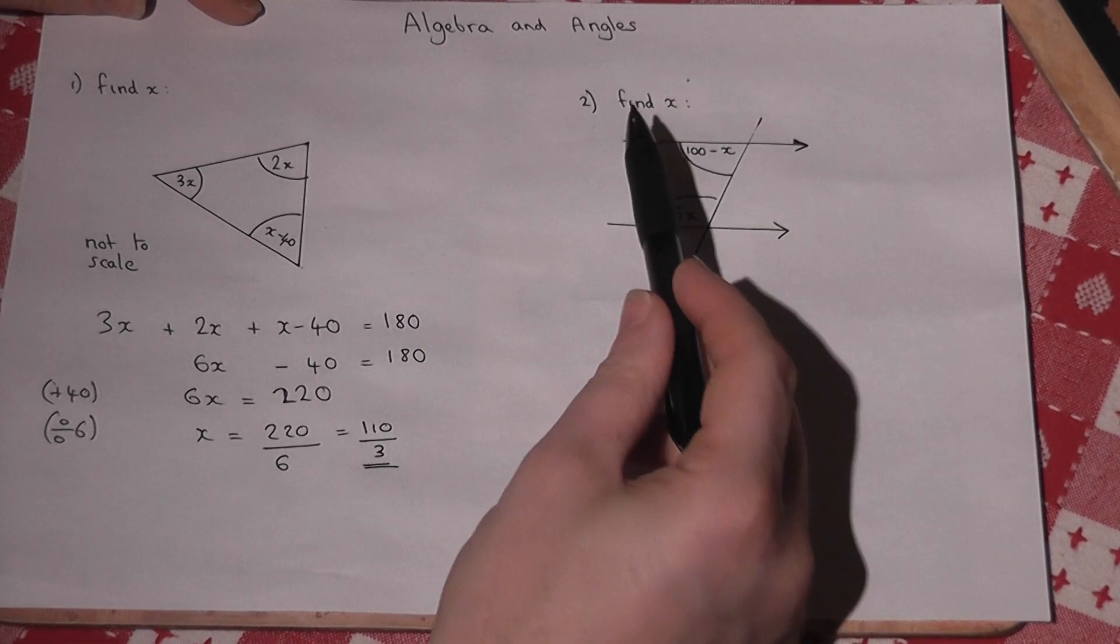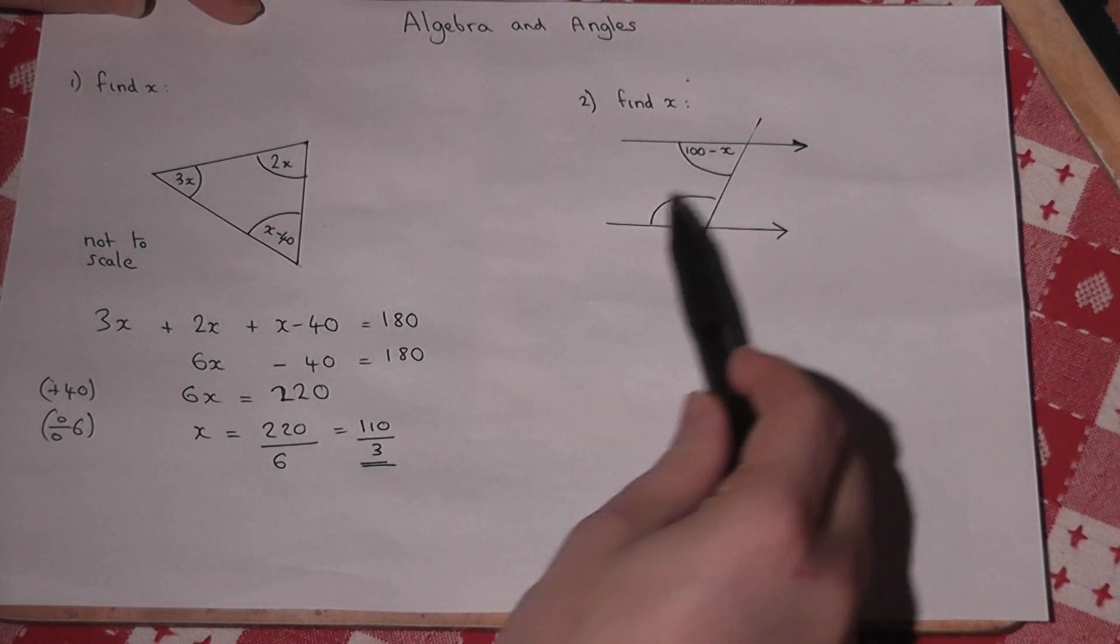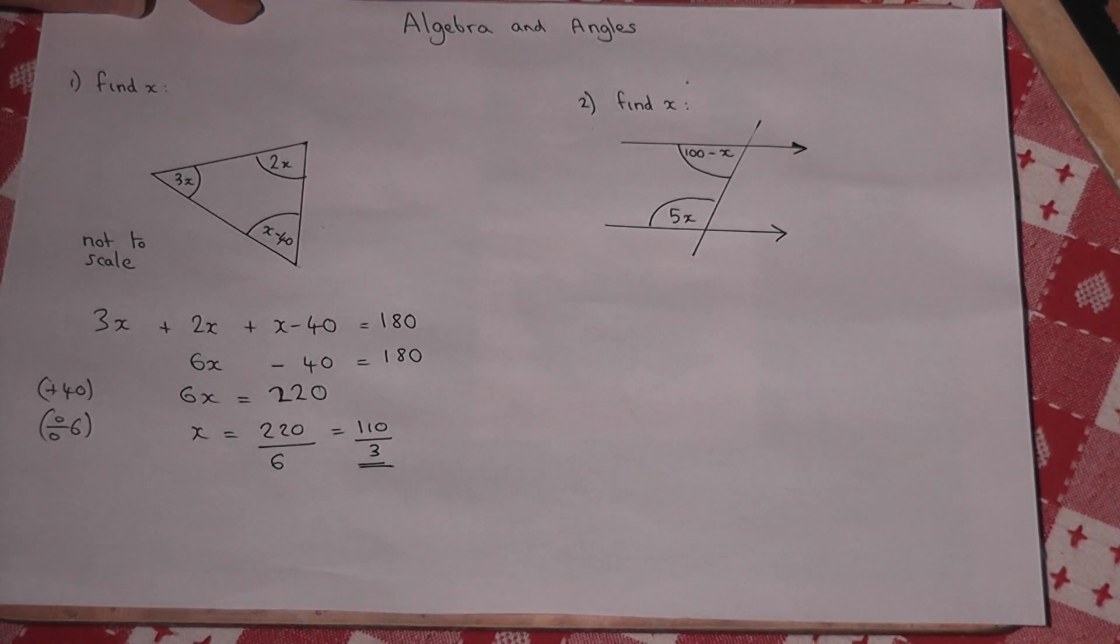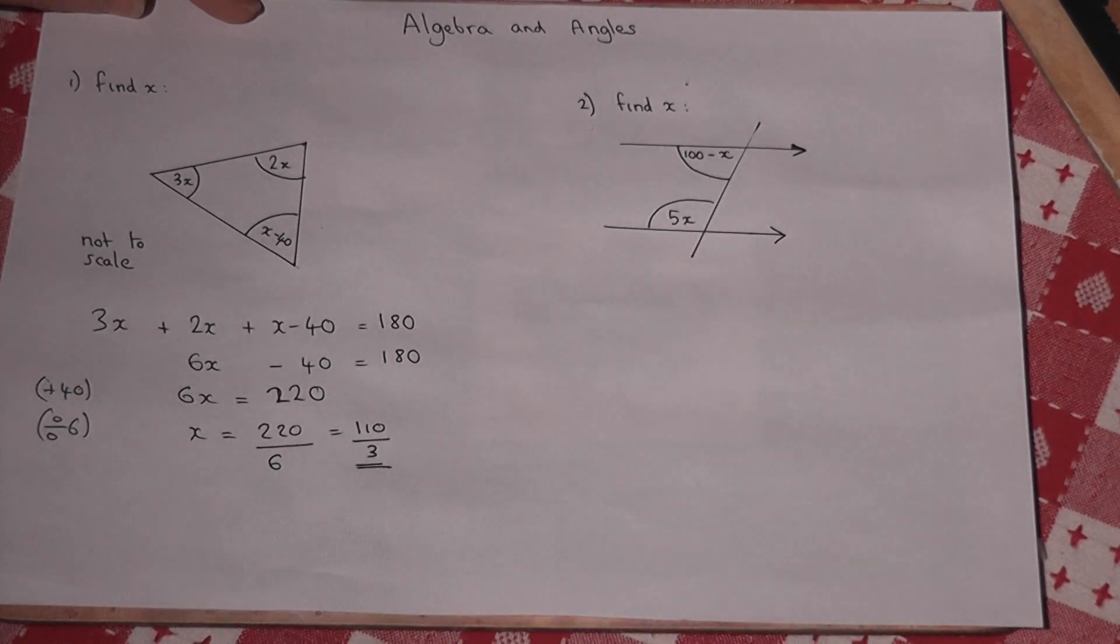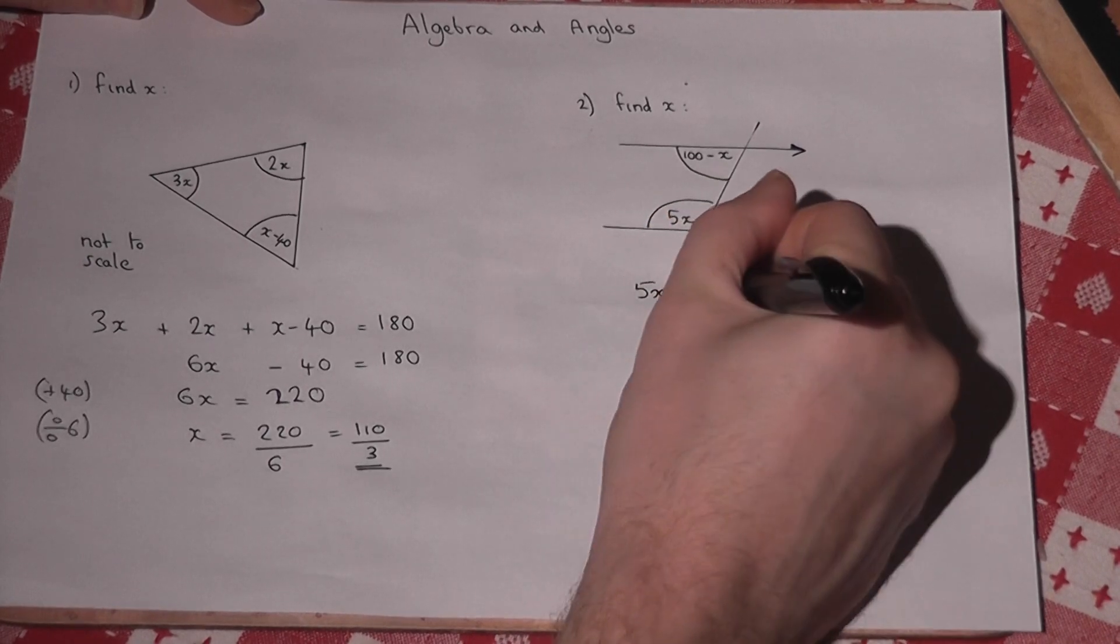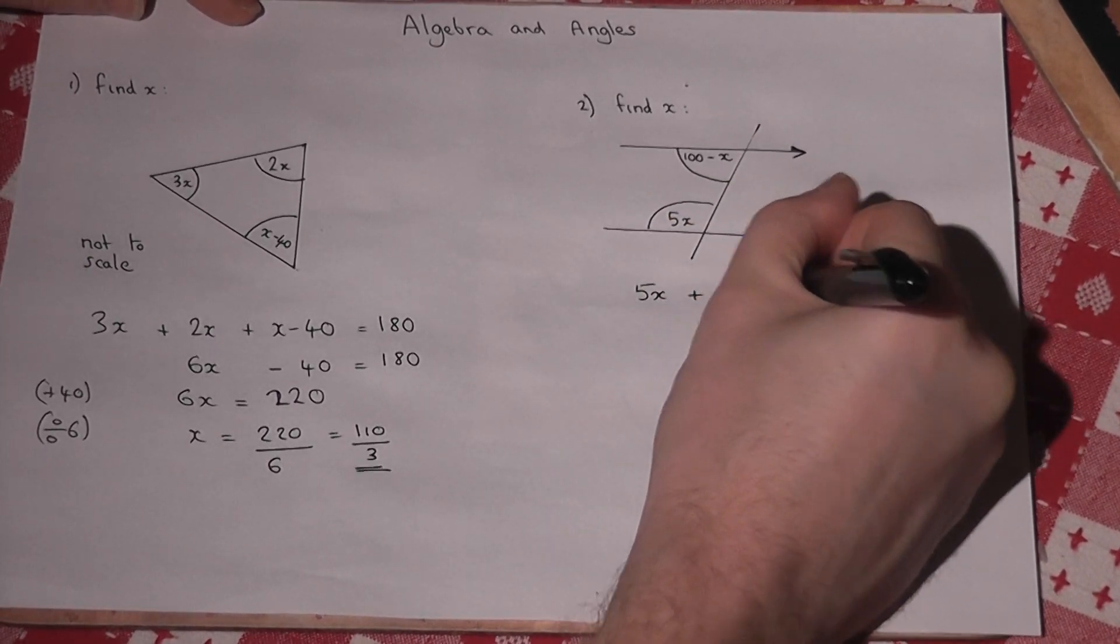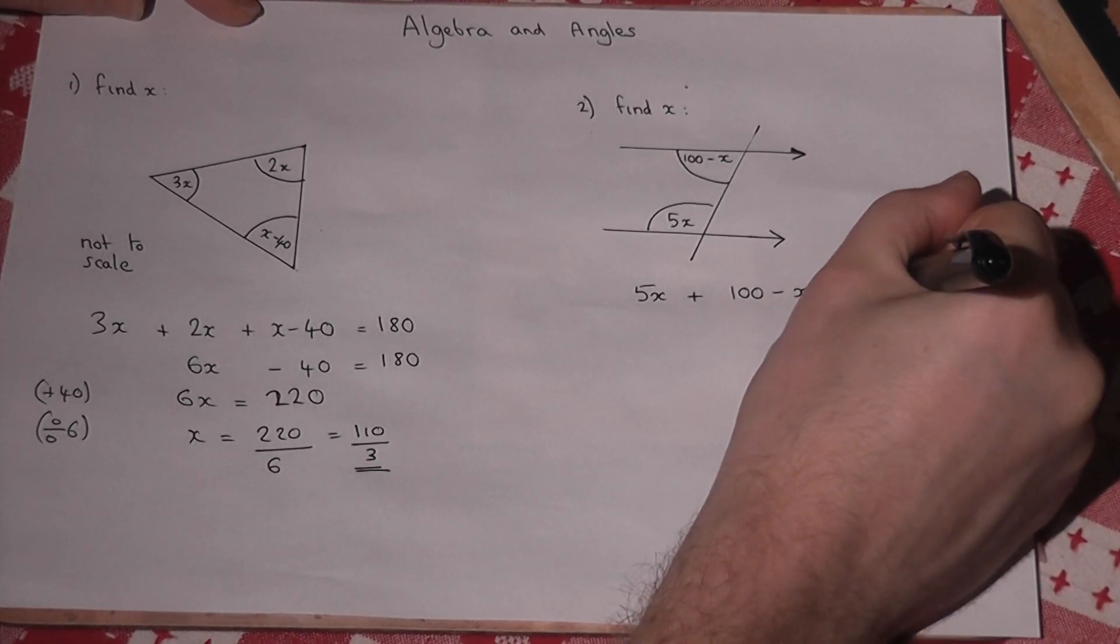In the second example, we have 2 parallel lines, hence the arrows. Now when you have 2 parallel lines, the angles contained therein add to make 180. So 5x plus 100 minus x must equal 180.